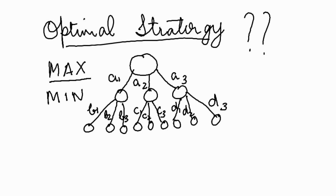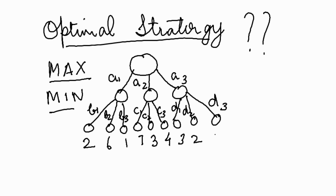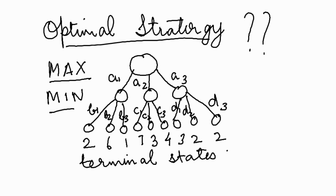Then we have the terminal states, which have utility values. Remember, the higher the utility value the better it is for Max. The utility values of the terminal states are: 2, 6, 1, 7, 3, 4, 3, 2, 2 corresponding to b1, b2, b3, c1, c2, c3, d1, d2, d3 respectively.